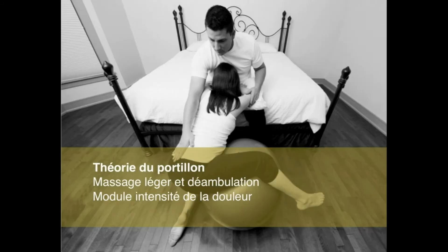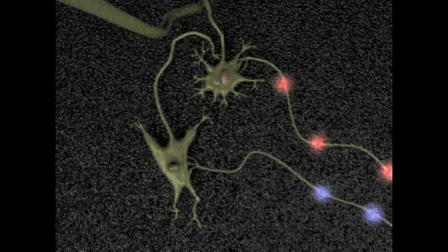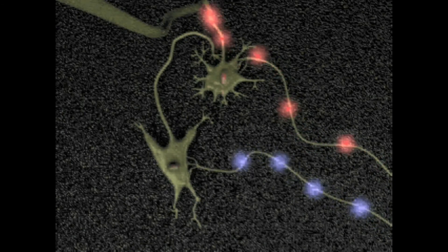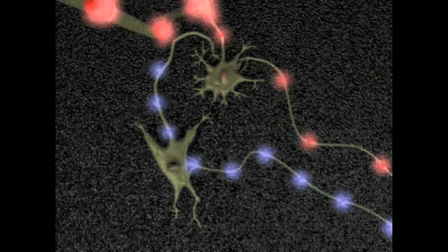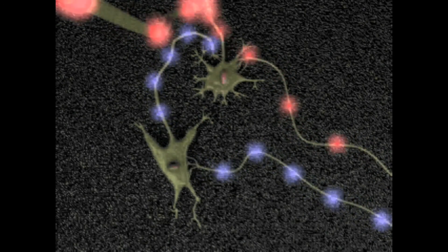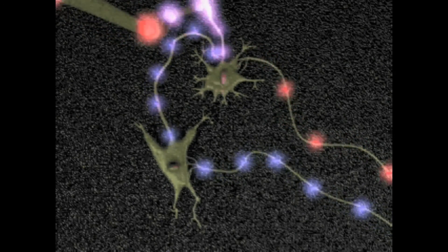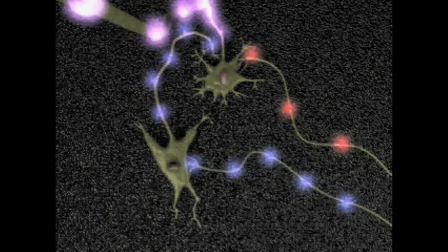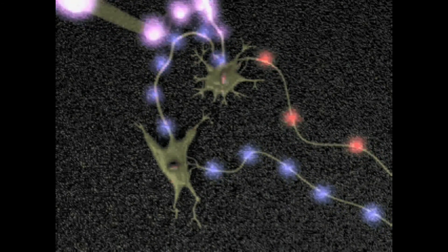Le deuxième mécanisme, aussi connu sous le nom de la théorie du portillon, est un mécanisme par lequel le message nociceptif est bloqué en partie dans la moelle. Ça se passe par une stimulation légère de la zone douloureuse, par massage et aussi par le fait de bouger en travail. Ce mécanisme module surtout l'aspect intensité, donc l'intensité de la douleur.